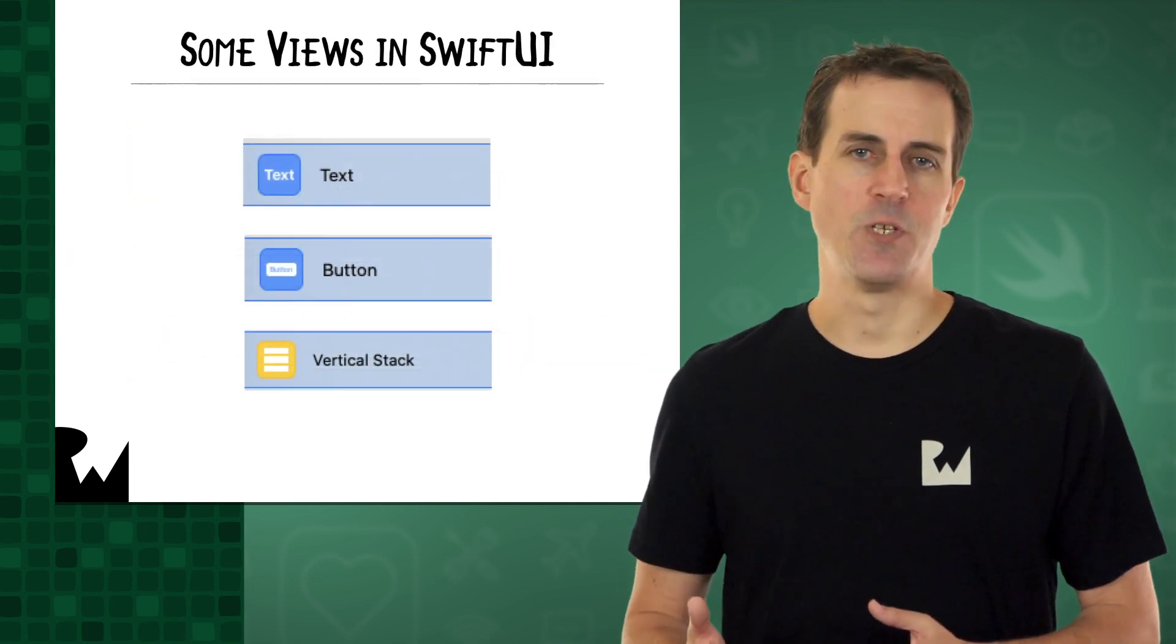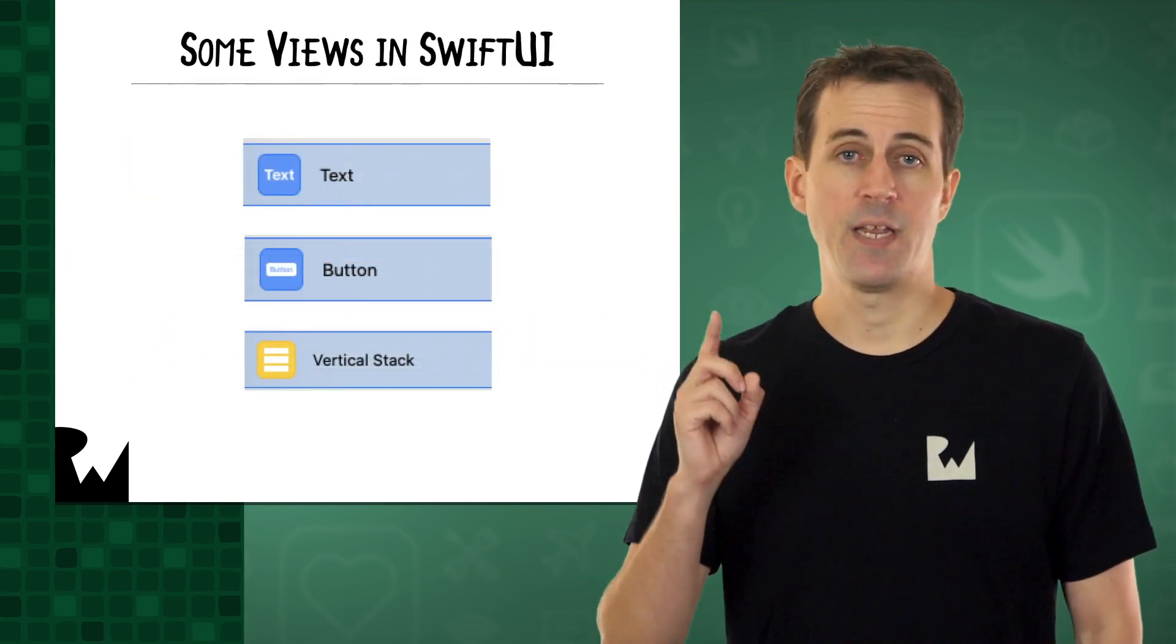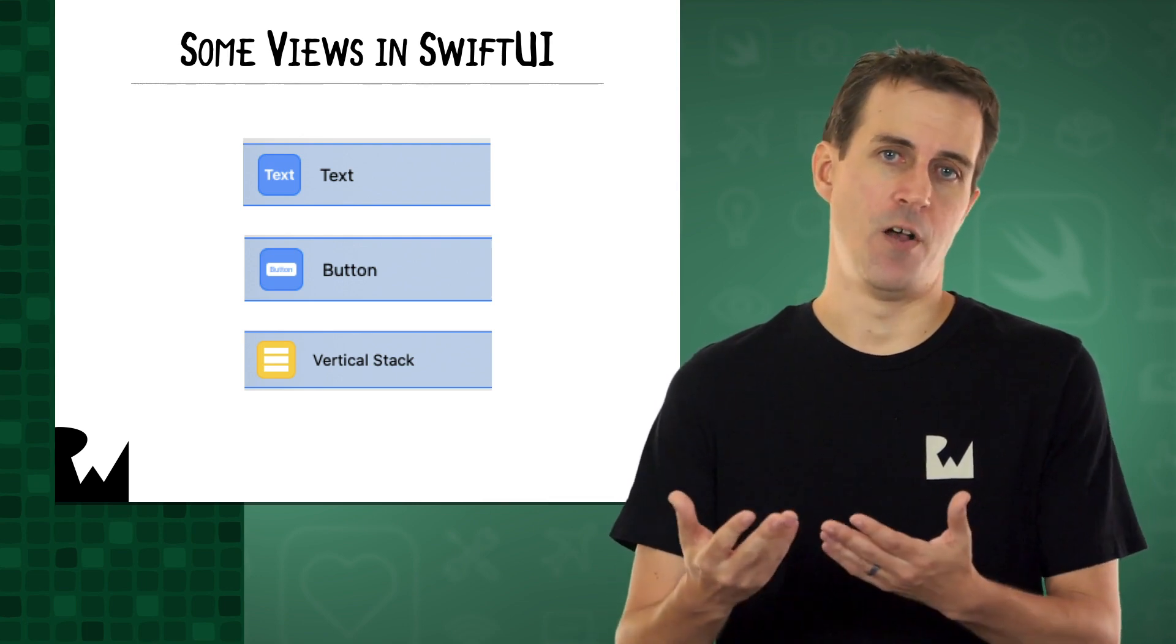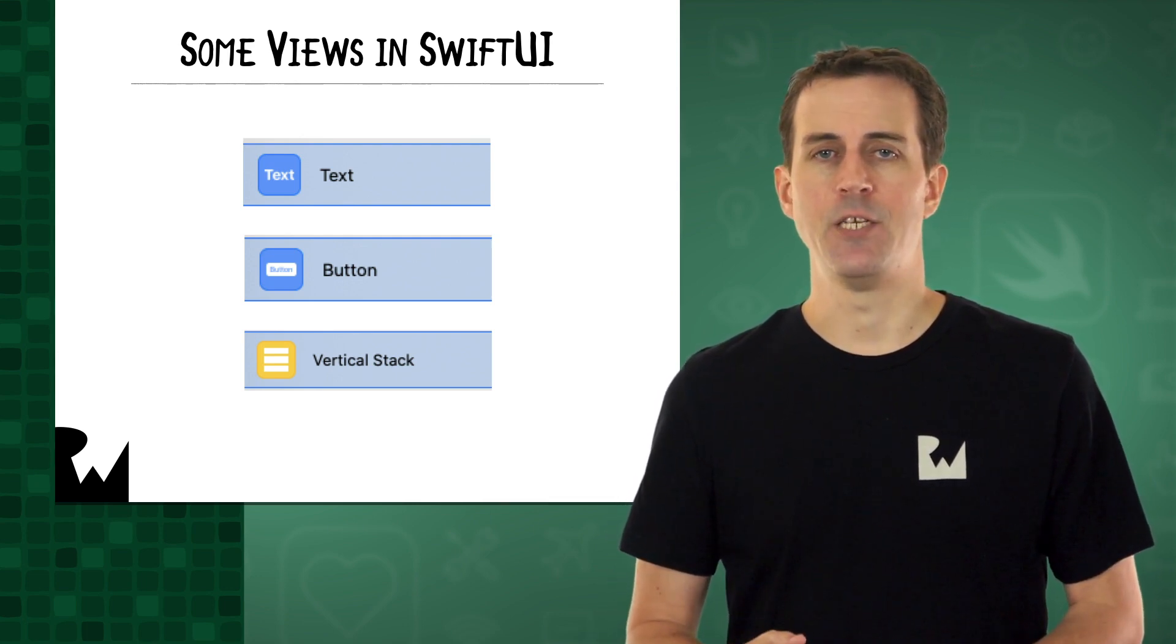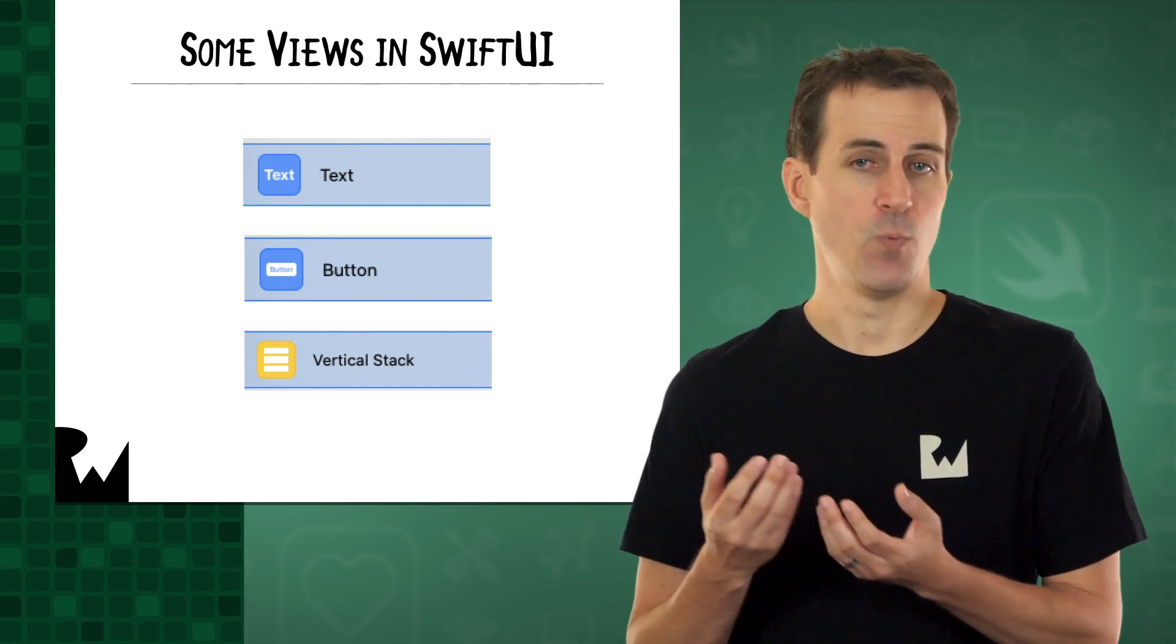There are different types of views in SwiftUI. These different types of views have one thing in common. They can all be drawn on the screen. What makes each type different is a combination of what they look like and what they do.